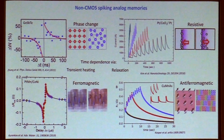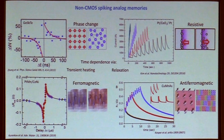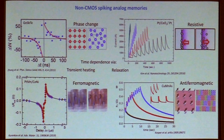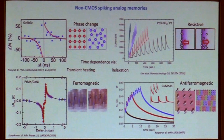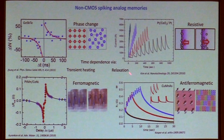There are first attempts to realize spiking functionalities in all these types of memories. Two ways to introduce time dependence are transient heating — the first pulse heats the device, making it easier for the next pulse to switch if it arrives quickly — and relaxation, where the memory state decays over time so that two closely-spaced pulses add up while widely-spaced ones do not. This implements the leaky sum behavior. In all these technologies there are representations of these spiking functionalities.